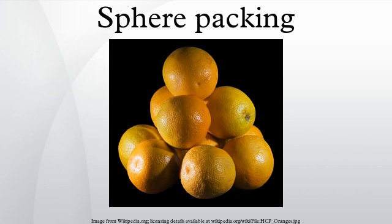Hypersphere packing: the sphere packing problem is the three-dimensional version of a class of ball packing problems in arbitrary dimensions. In two dimensions, the equivalent problem is packing circles on a plane. In dimensions higher than three, the densest regular packings of hyperspheres are known up to eight dimensions. Very little is known about irregular hypersphere packings. It is possible that in some dimensions the densest packing may be irregular, as in certain dimensions the densest known irregular packing is denser than the densest known regular packing. Dimension 24 is special due to the existence of the Leech lattice, which has the best kissing number and is the densest lattice packing.